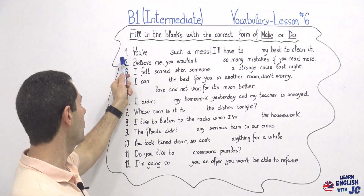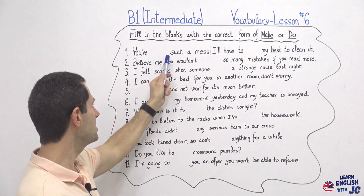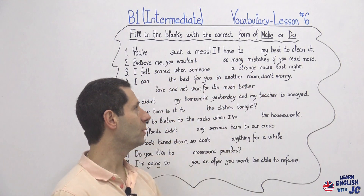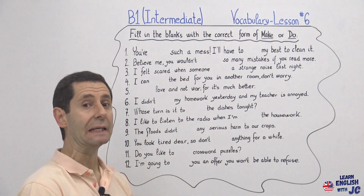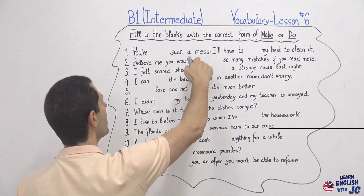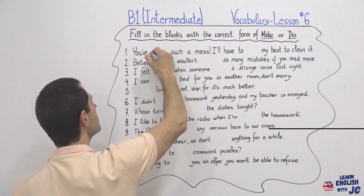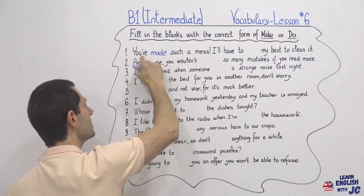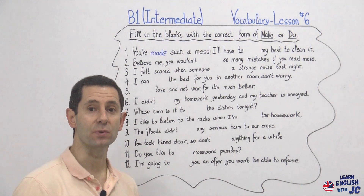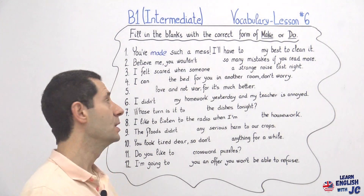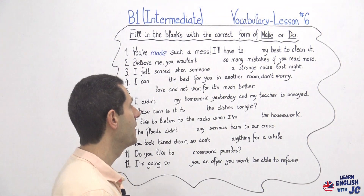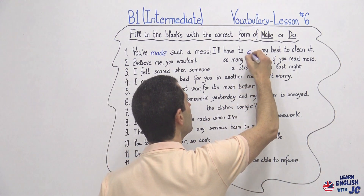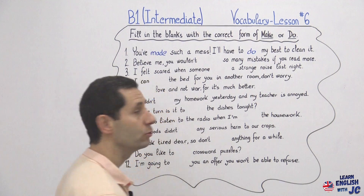Number one: 'You've made such a mess, I'll have to do my best to clean it.' Remember that with 'mess' you use make, but because this is present perfect you use the past participle — 'you've made such a mess.' And with 'my best,' remember we use do — 'I'll have to do my best.'